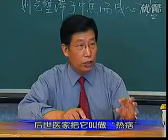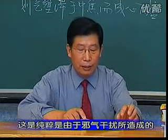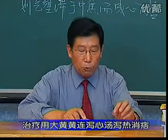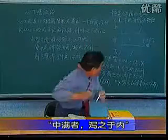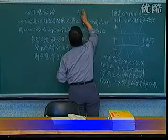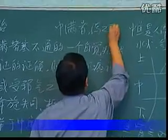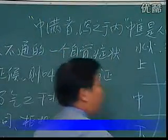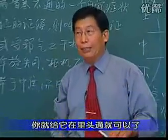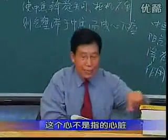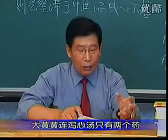这是纯粹由于邪气干扰所造成的热痞。治疗用大黄黄连泻心汤，泻热消痞。为什么叫泻心汤？《黄帝内经》有一句话叫做'壅满者泻之于内'，气机壅滞在中焦、中焦障碍，你就给它在里头通就可以了。这个心不是指的心脏，而是指的心下，指的胃脘部。大黄黄连泻心汤只有两个药：大黄二两，黄连一两。